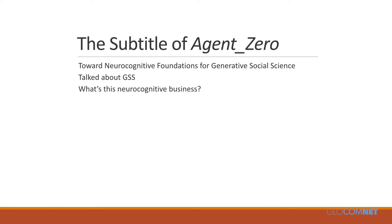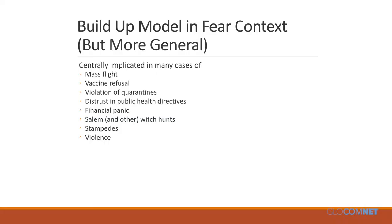The subtitle of Agent Zero is Toward Neurocognitive Foundations for Generative Social Science. Let's talk about the Agent Zero model in the fear instantiation, where the emotion in question is fear. Fear is centrally implicated in mass flight, vaccine refusal, financial panic, Salem witch hunts, violence, and stampedes. One complex in the brain centrally implicated in this is the amygdala and amygdaloid complex — drawing on Joseph LeDoux's work on fear and the amygdala, and Elizabeth Phelps and that community.